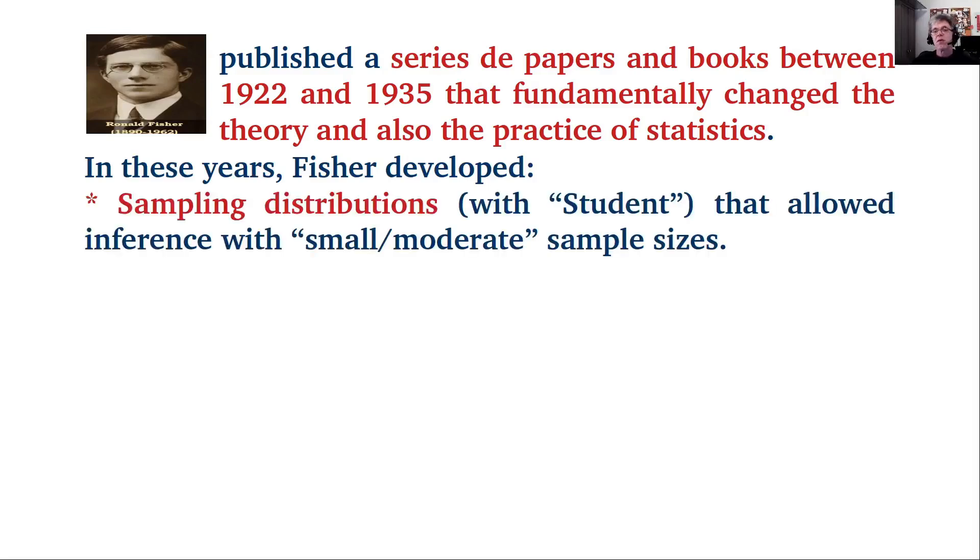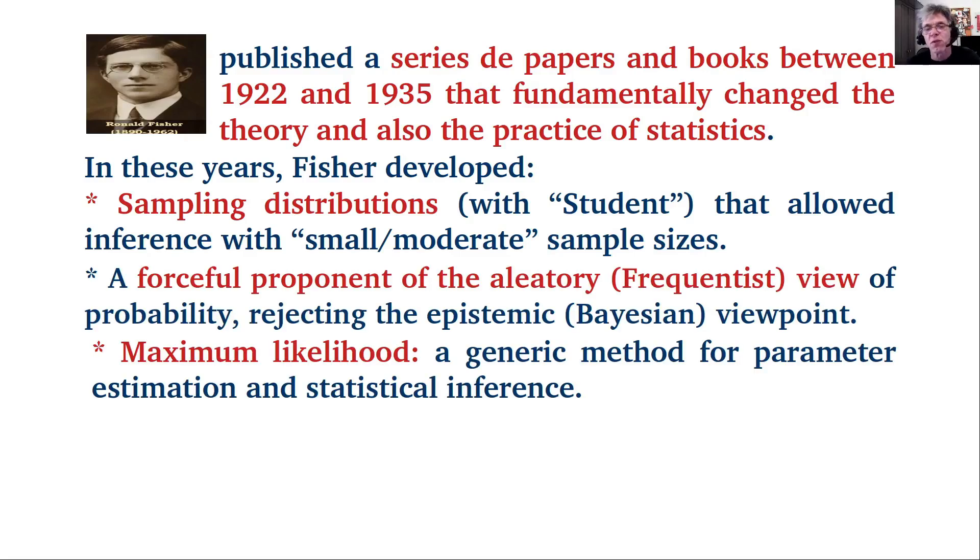In these years, Fisher developed what we now call the sampling distribution, along with Student, the pen name of British mathematician William Sealy Gosset, that allowed making statistical inference based on small to moderate sample sizes similar to those gathered by scientists in common experiments. He was a forceful proponent of the aleatory or frequentist view of probability, rejecting the epistemic or Bayesian viewpoint. He developed a universal method for parameter estimation valid for absolutely any probability distribution. This also allowed, besides parameter estimation, the making of statistical inference. He developed the ideas of hypothesis tests and p-values as key decision rules on how to make decisions based on estimated parameters and their uncertainty.